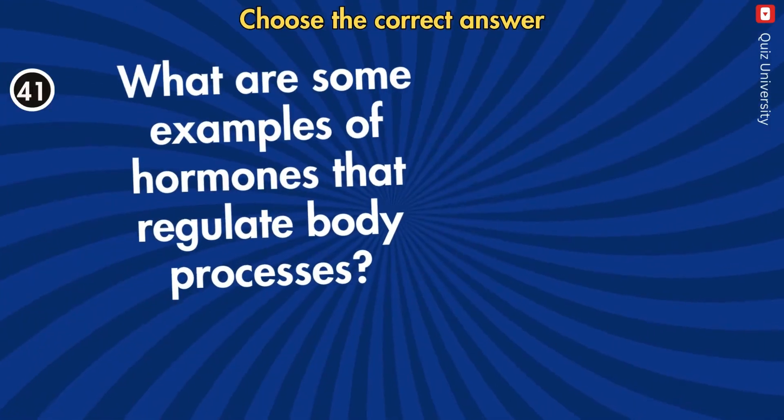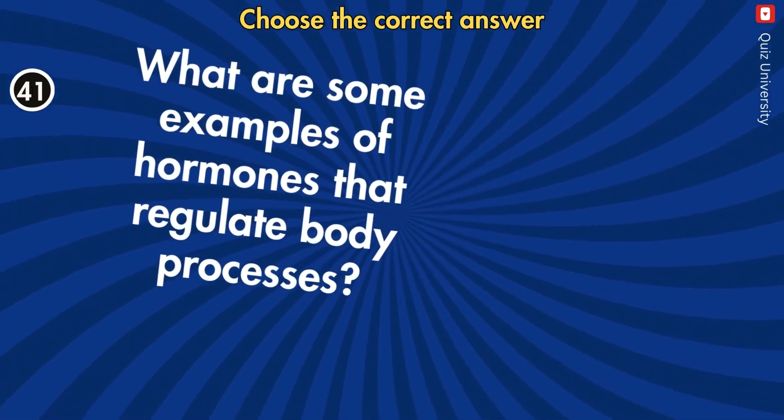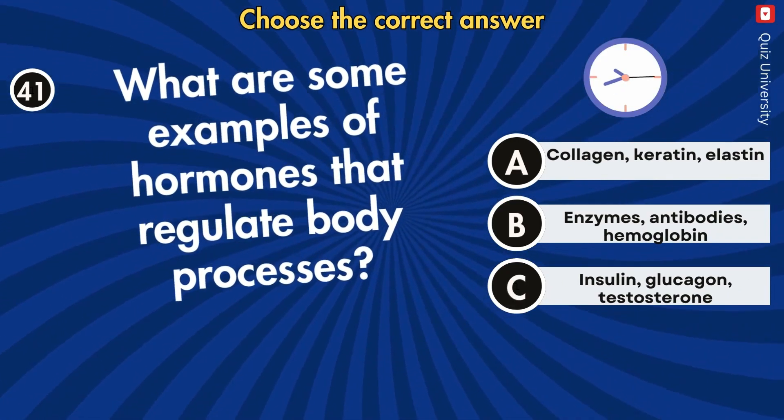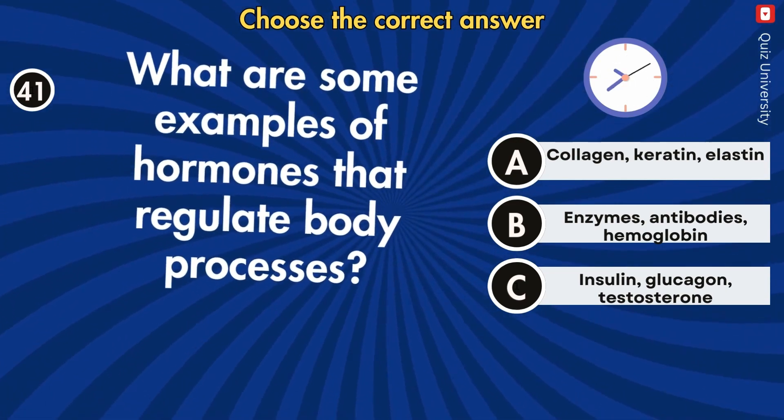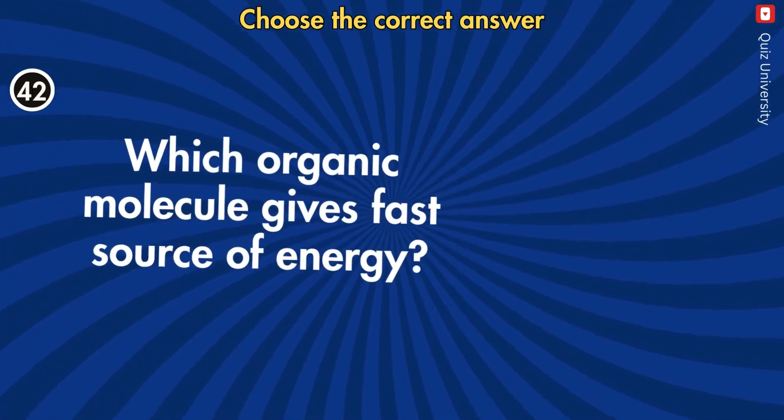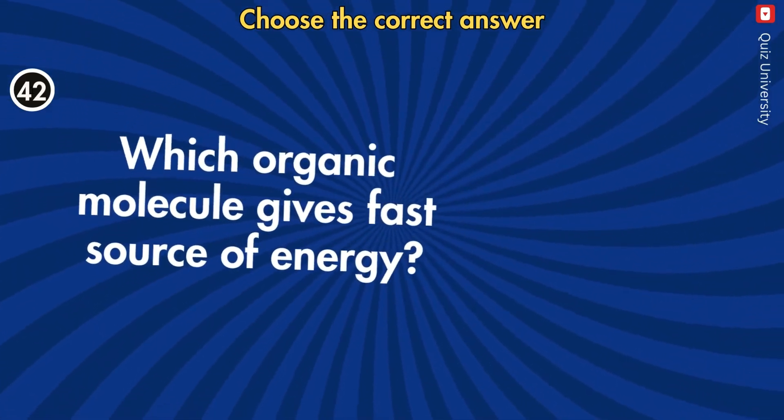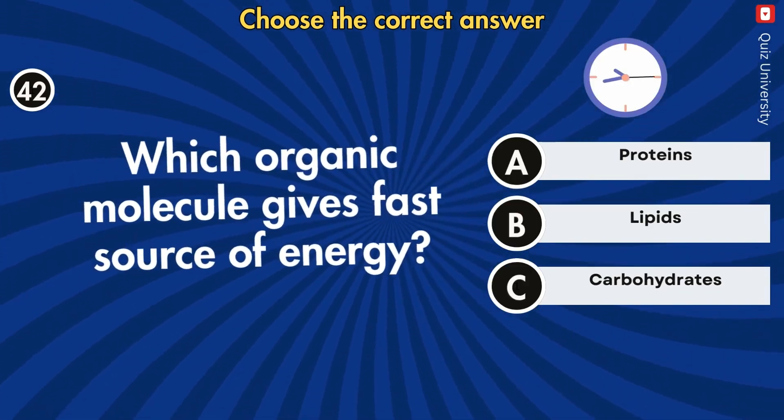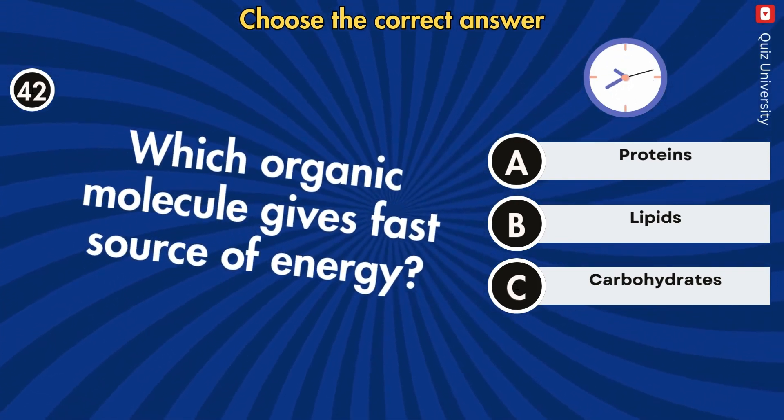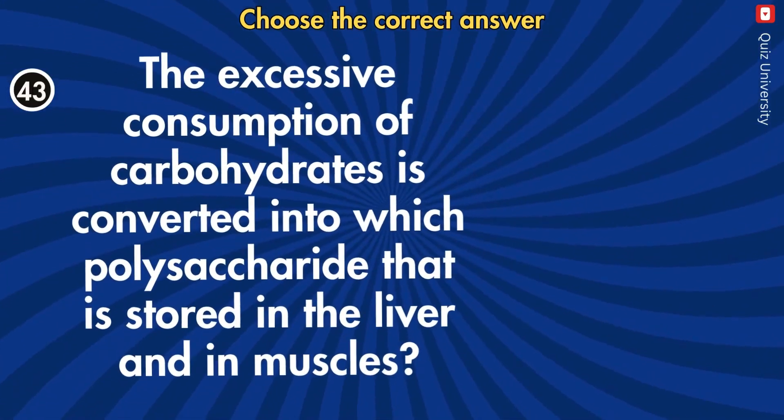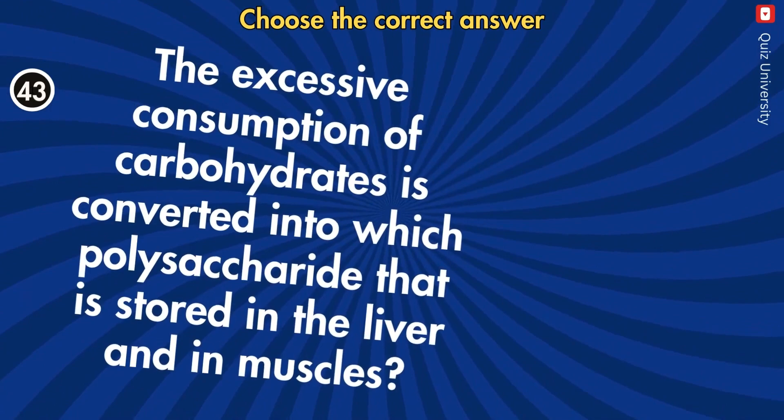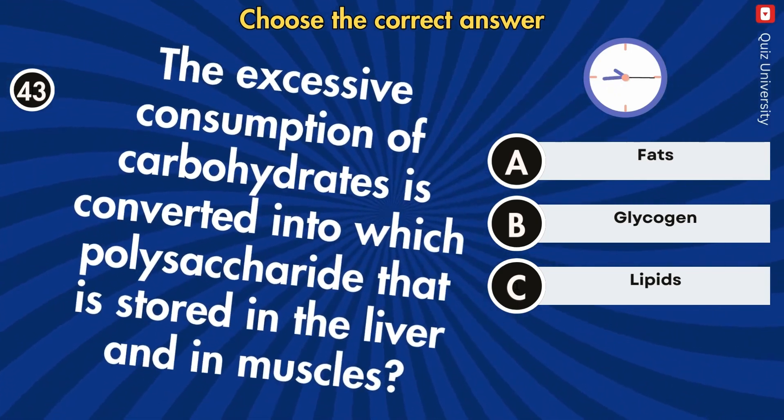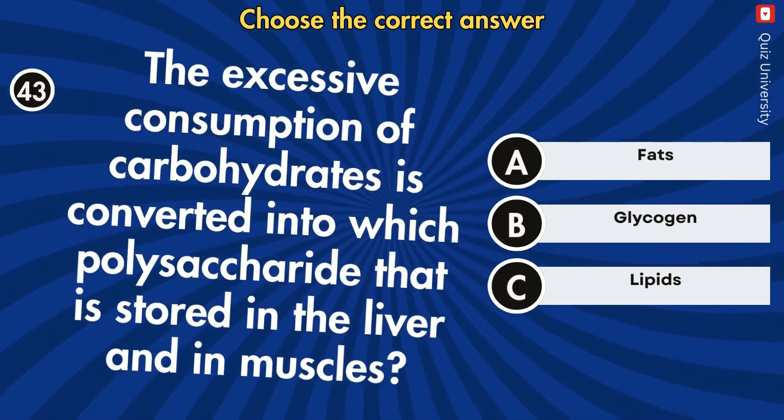What are some examples of hormones that regulate body processes? Which organic molecule gives fast source of energy? The excessive consumption of carbohydrates is converted into which polysaccharide that is stored in the liver and in muscles?